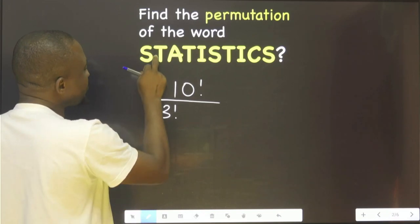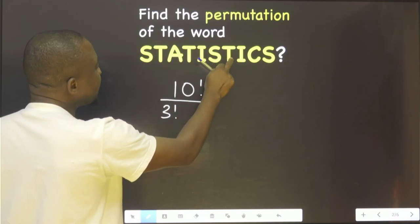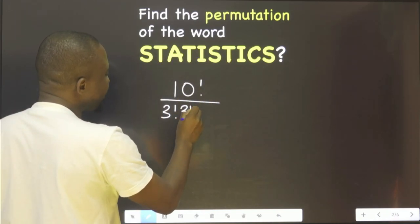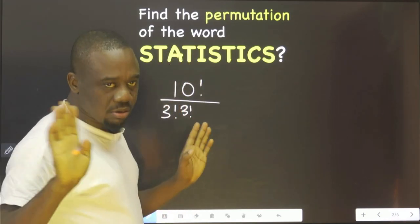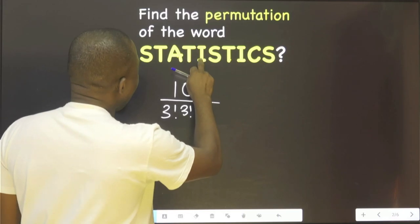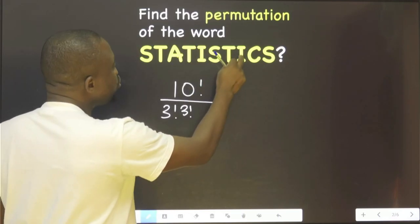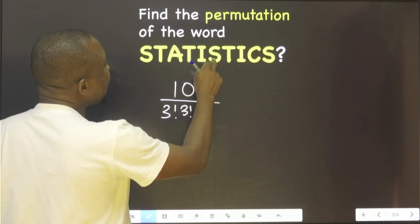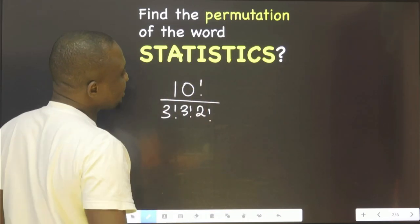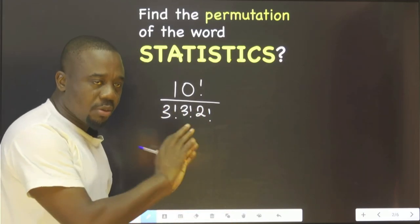How many T's? One, two, three. 3 factorial. How many A's? Just one, don't waste your time. How many I's? One, two. 2 factorial. How many S's? We've already counted S. C is just one, then you stop.